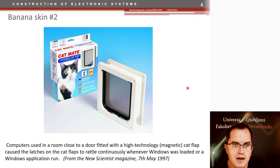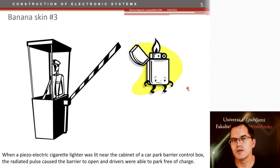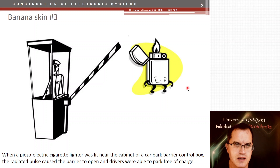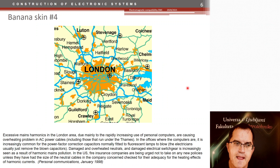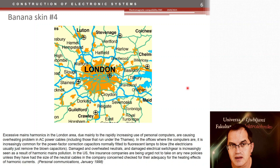Another case: with a cigarette lighter you could open a car park barrier — quite useful, but they've since fixed that. A more serious case: high-power cables in London started to heat up and overheat due to a phenomenon nobody anticipated at the time.